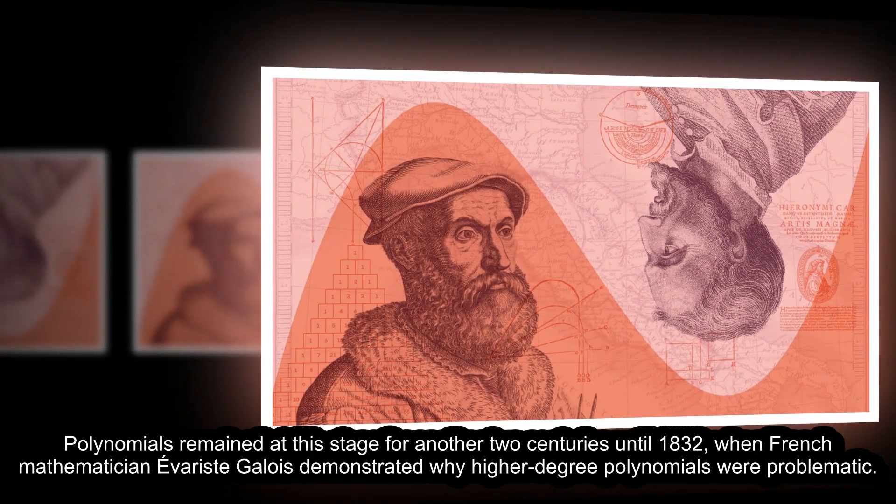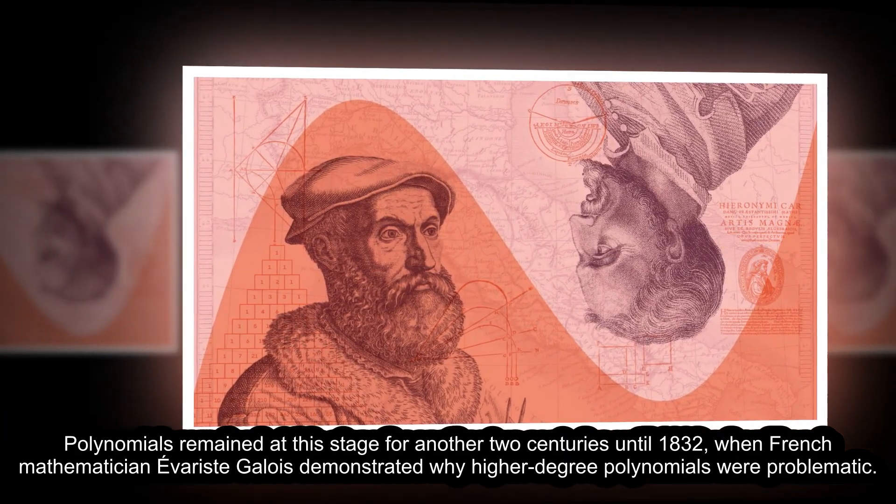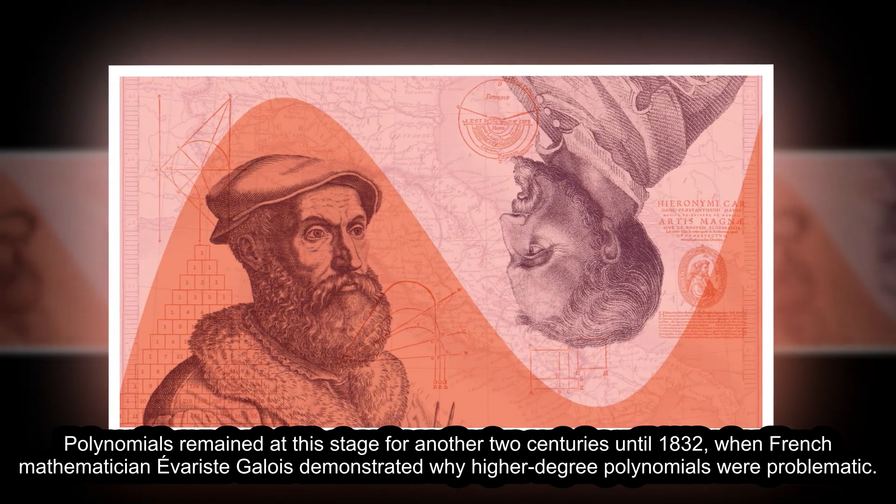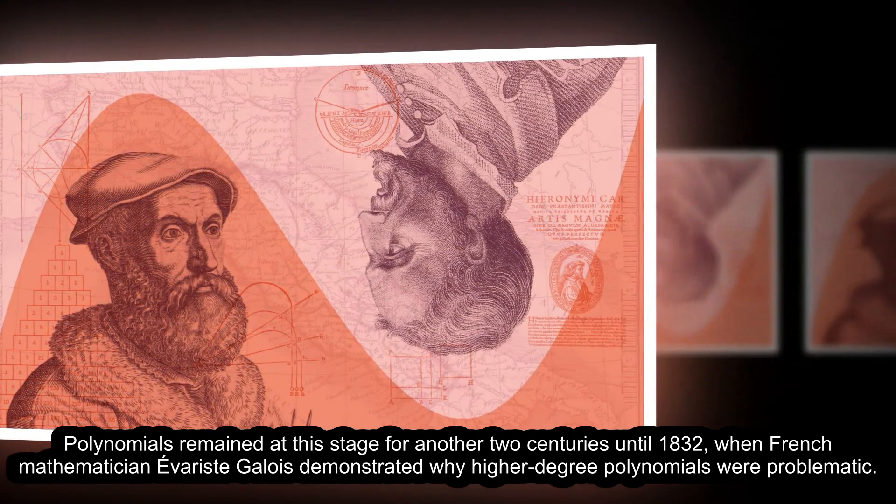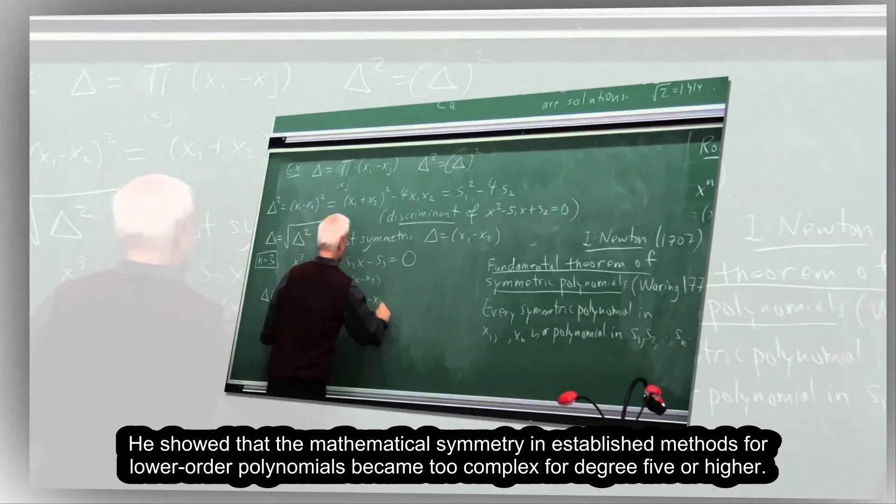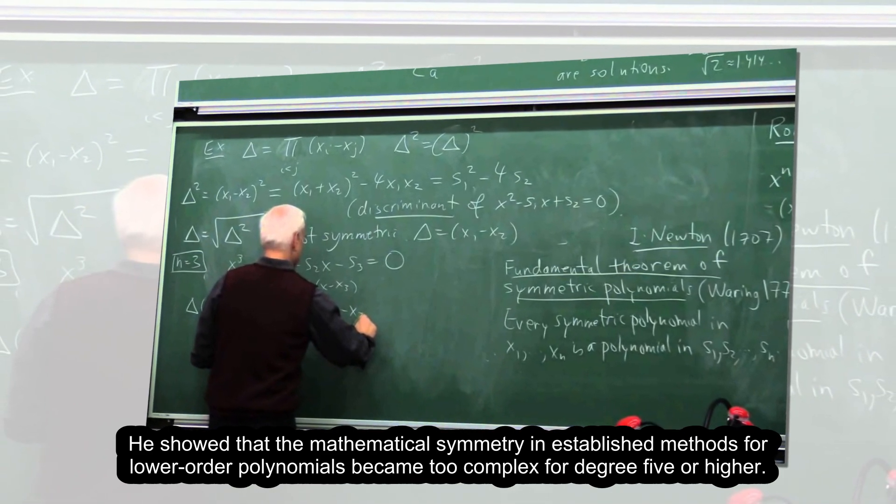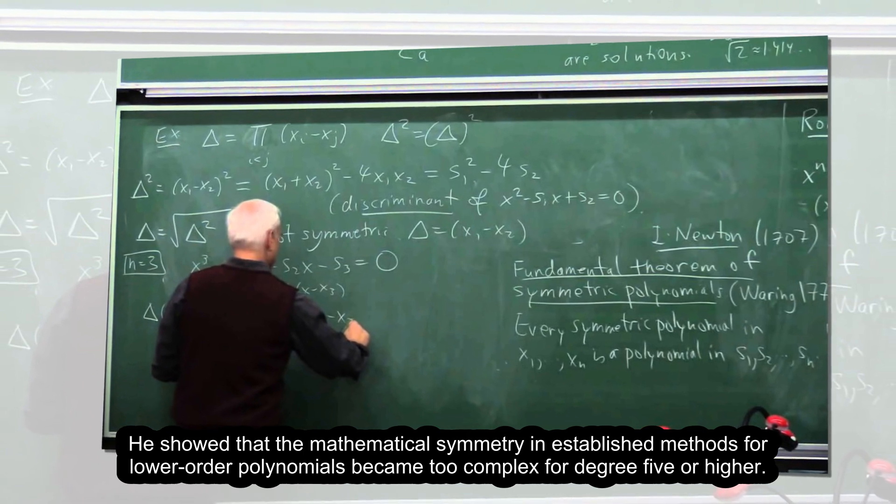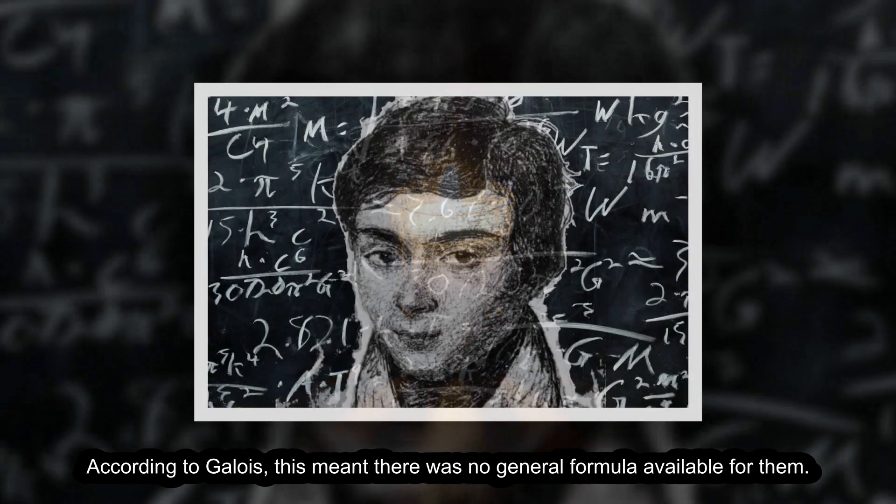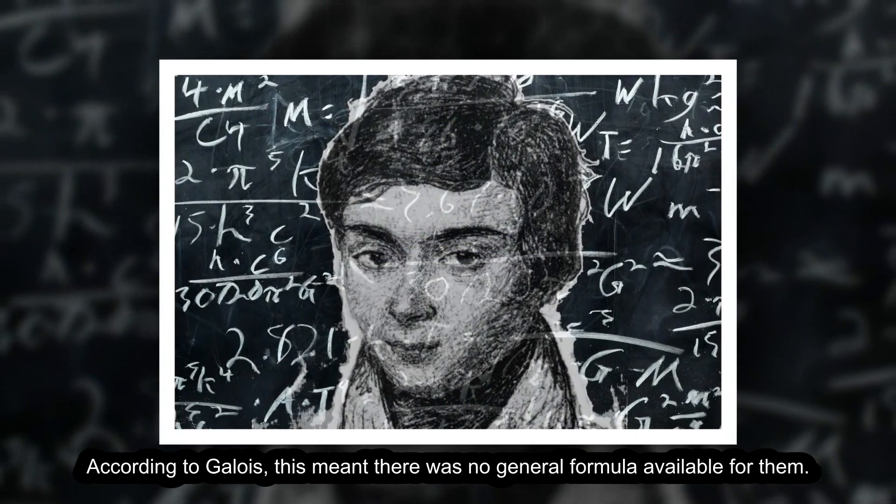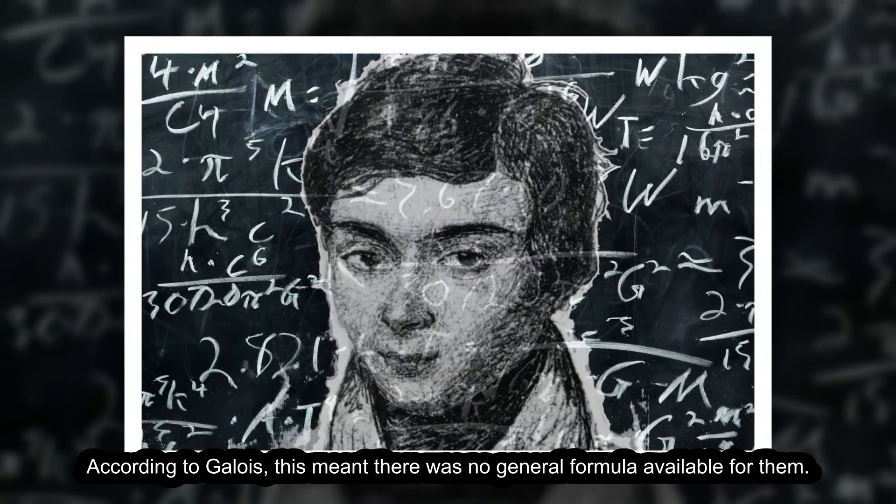Polynomials remained at this stage for another two centuries until 1832, when French mathematician Évariste Galois demonstrated why higher-degree polynomials were problematic. He showed that the mathematical symmetry in established methods for lower-order polynomials became too complex for degree 5 or higher. According to Galois, this meant there was no general formula available for them.